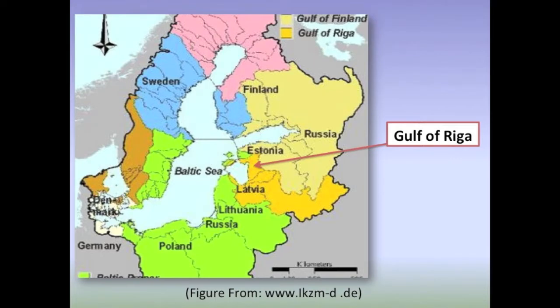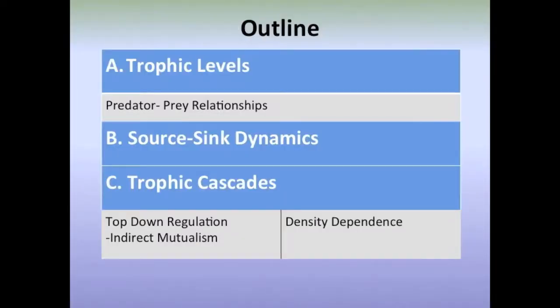In the Baltic Main Basin and the Gulf of Riga, cod, herring, zooplankton, and phytoplankton are all present. Cod, based on fluctuations in population size, either depart from or return to the Gulf of Riga from the Baltic Main Basin. This movement of cod affects the remaining trophic levels because cod consume herring, herring consume zooplankton, and zooplankton consume phytoplankton. Ultimately, the cod population effects trickle down all the way to the base trophic level, the phytoplankton. Topics addressed include trophic levels, source-sink dynamics, and trophic cascades.